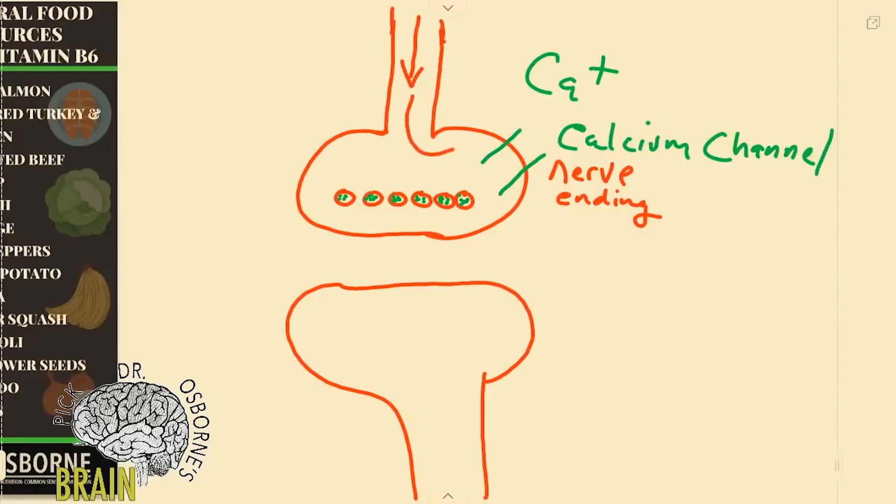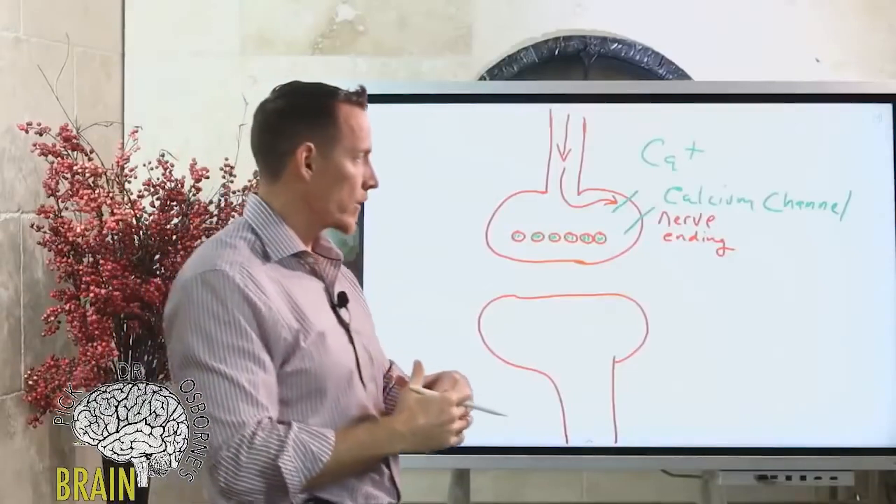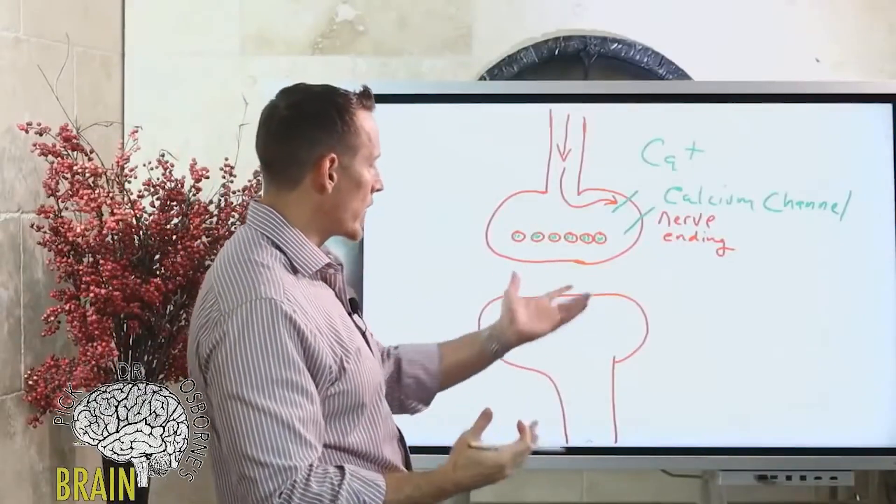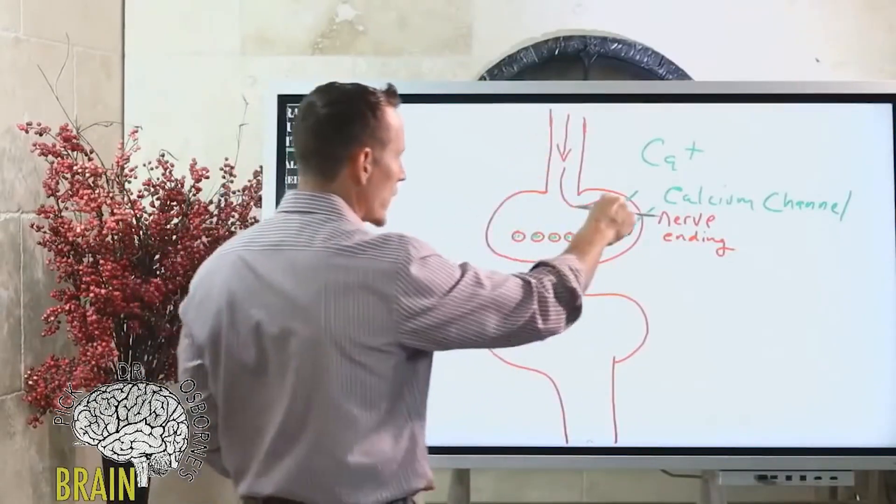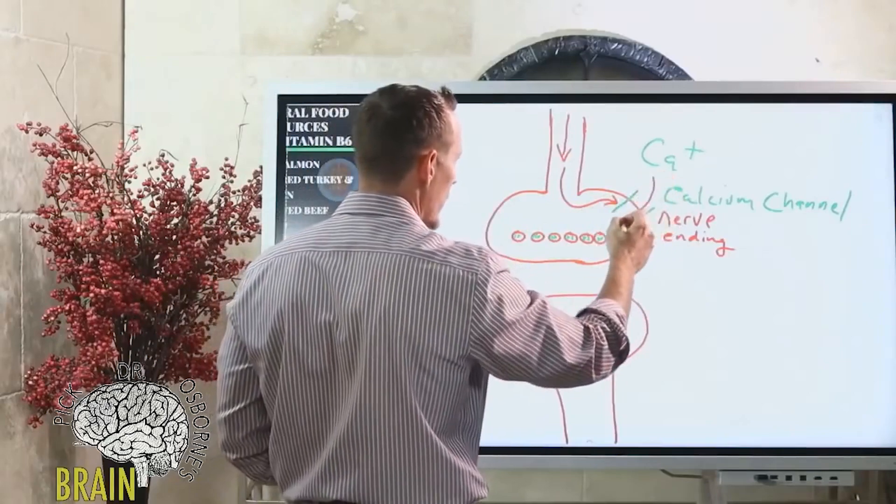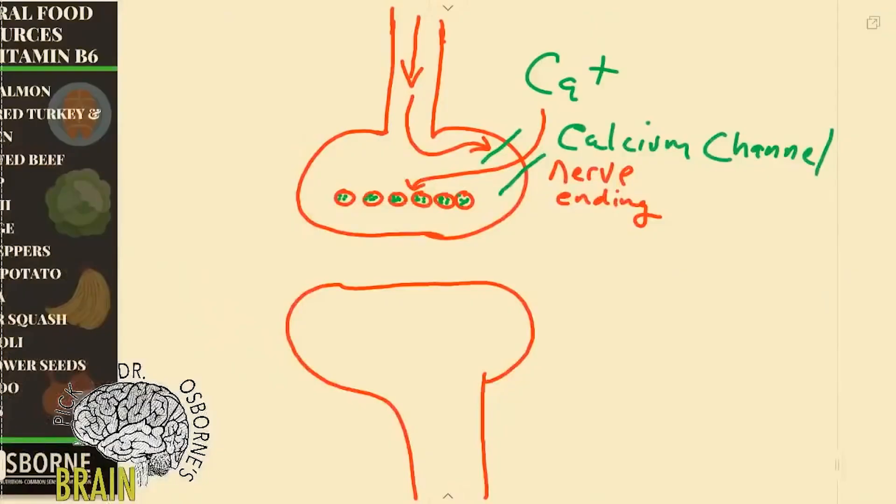When this nerve impulse hits this gate it opens it. It's an electrical gate, it's like your garage door opener. If you click the button the door opens. Well this nerve impulse opens this gate and calcium floods into the cell or the tip of this nerve ending.